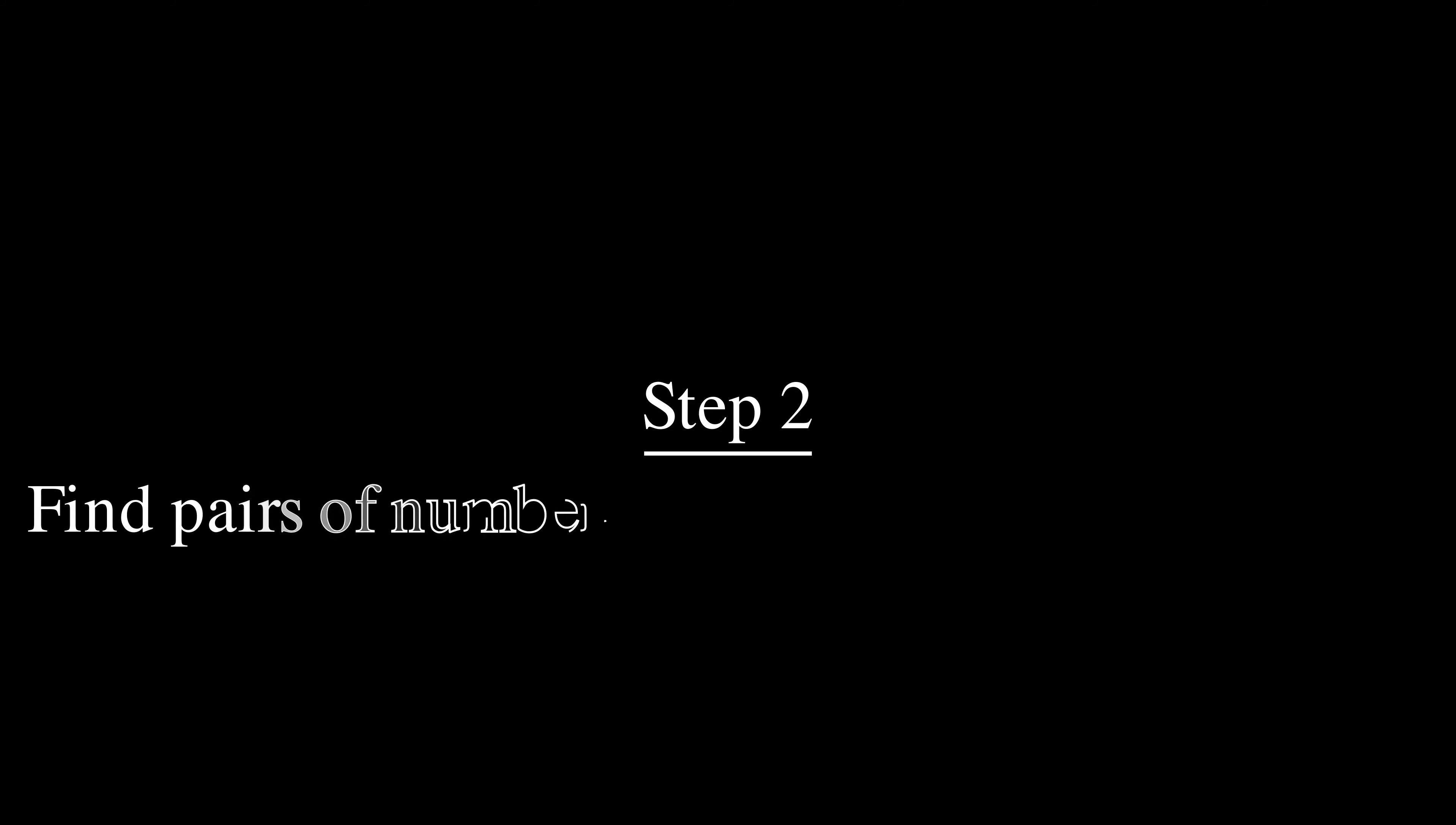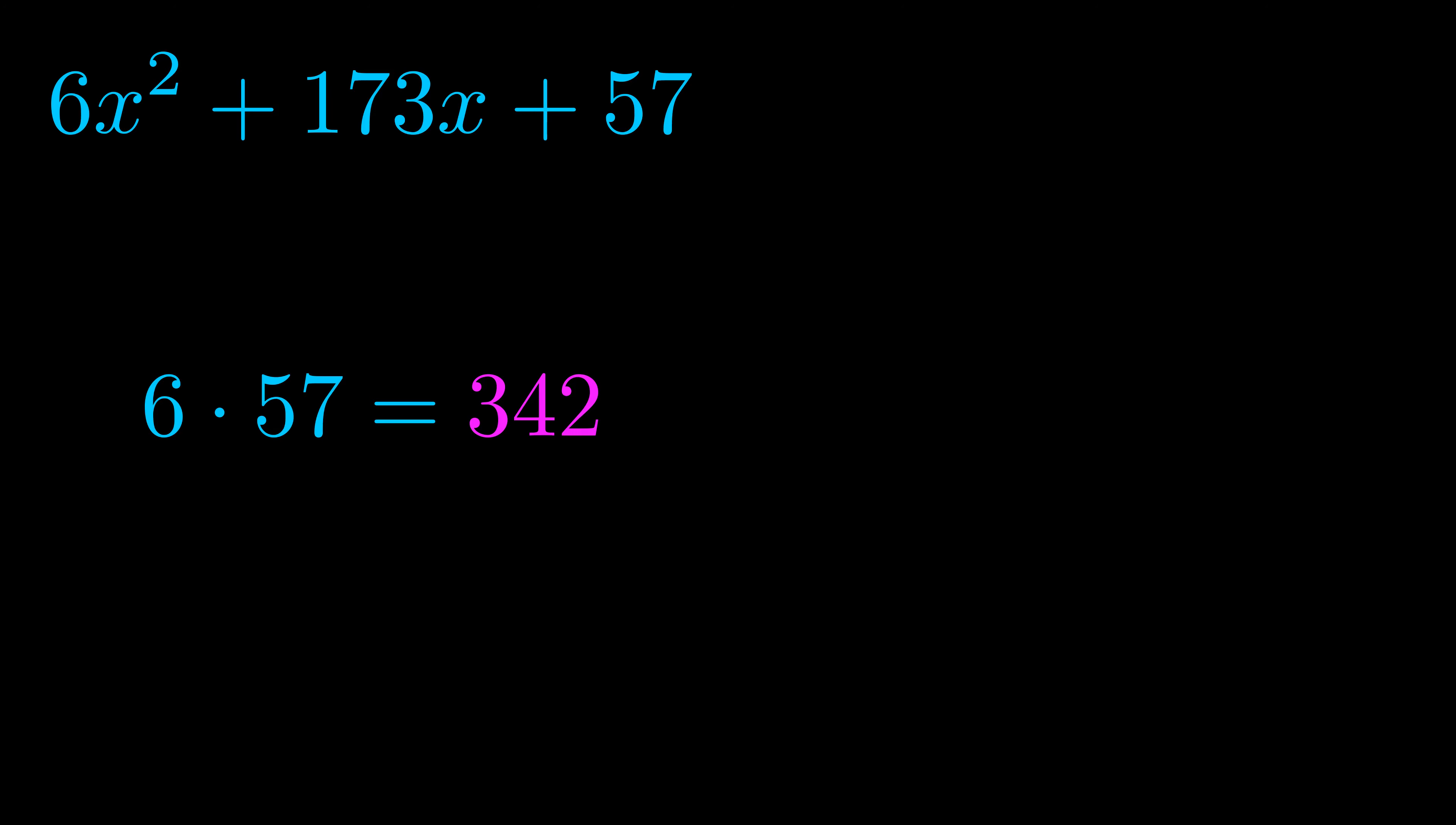Step two is to try to find all of the pairs which multiply to this number. Now turns out you don't really need to find all of them but go ahead and write down as many numbers as you can that multiply to the magenta value for now. Pause the video and resume when you're ready to continue.